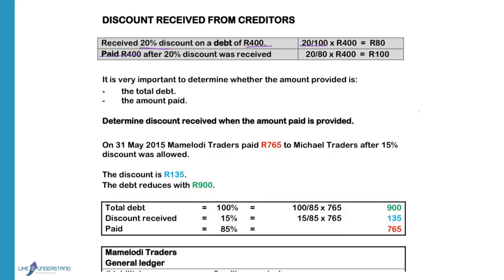We paid 400 Rand after a 20% discount was received. That means the 400 Rand is equal to 80%, because we only paid 80% of the debt. If we want to calculate the discount, we will divide 20 by 80 to work out what the discount is.